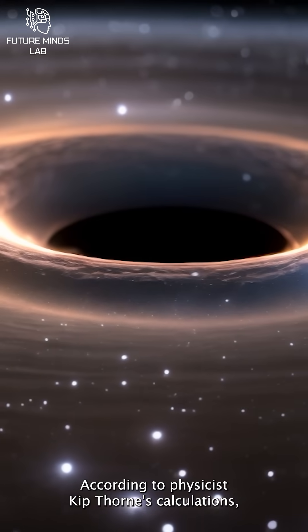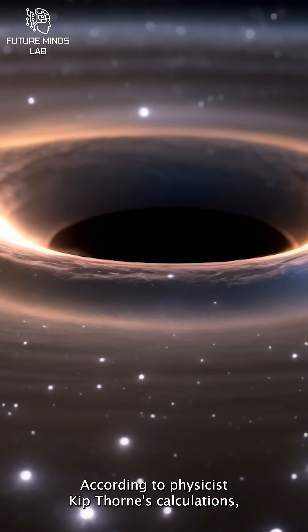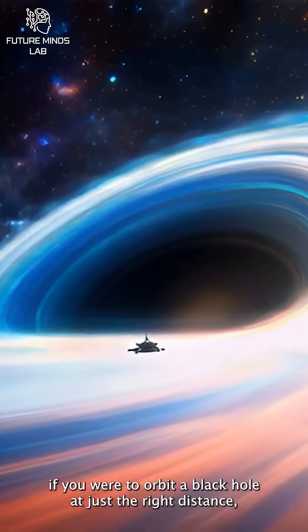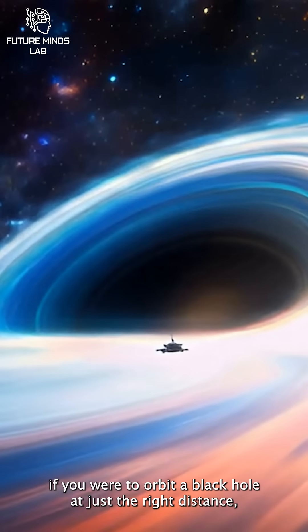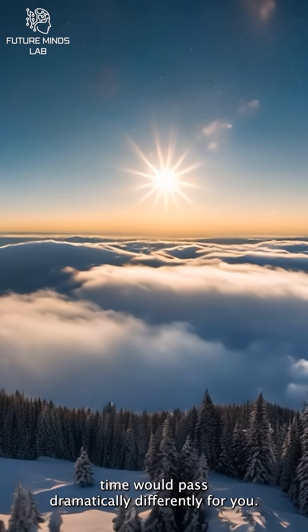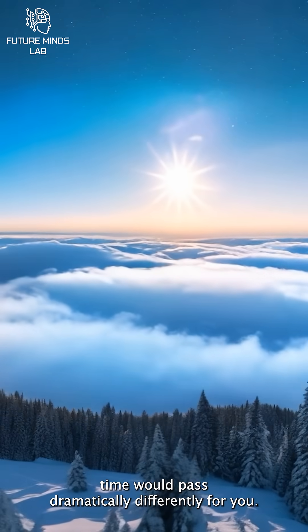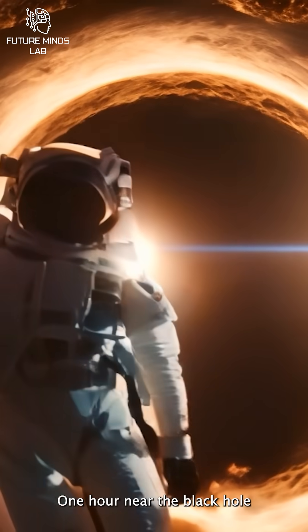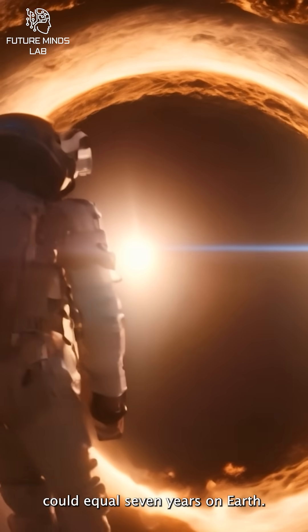According to physicist Kip Thorne's calculations, if you were to orbit a black hole at just the right distance, time would pass dramatically differently for you. One hour near the black hole could equal seven years on Earth.